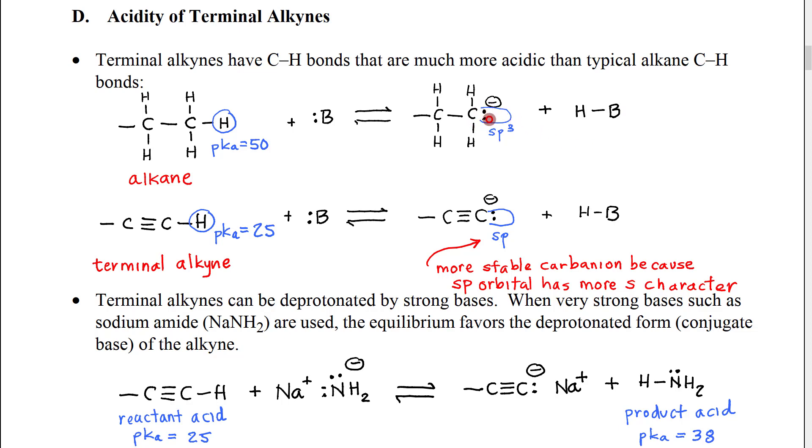The lone pair that is formed by removing or deprotonating this alkane has a lone pair in an sp3 hybridized orbital. If we compare that to a terminal alkyne, the alkyne to hydrogen bond has a pKa of about 25. So again,